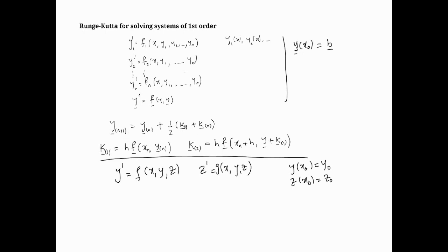And k2 would be the vector k2, and it would be h times the vector f at x_n plus h, and it would be the vector y_n plus the vector k1. So that would constitute the Runge-Kutta second order.